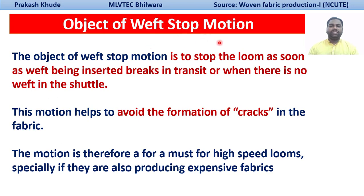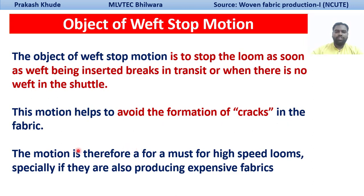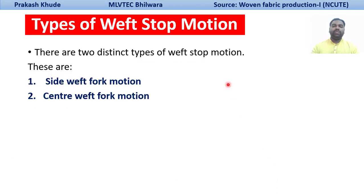The basic objective of your weft stop motion is to stop the loom as soon as the weft has been broken in transit, or if there is no weft in the shuttle. During that time we need to stop the loom. If the loom has not been stopped, that will ultimately cause the formation of cracks in the fabric. To avoid this, the weft stop motion is very important, specifically for high-speed looms when producing expensive fabric.